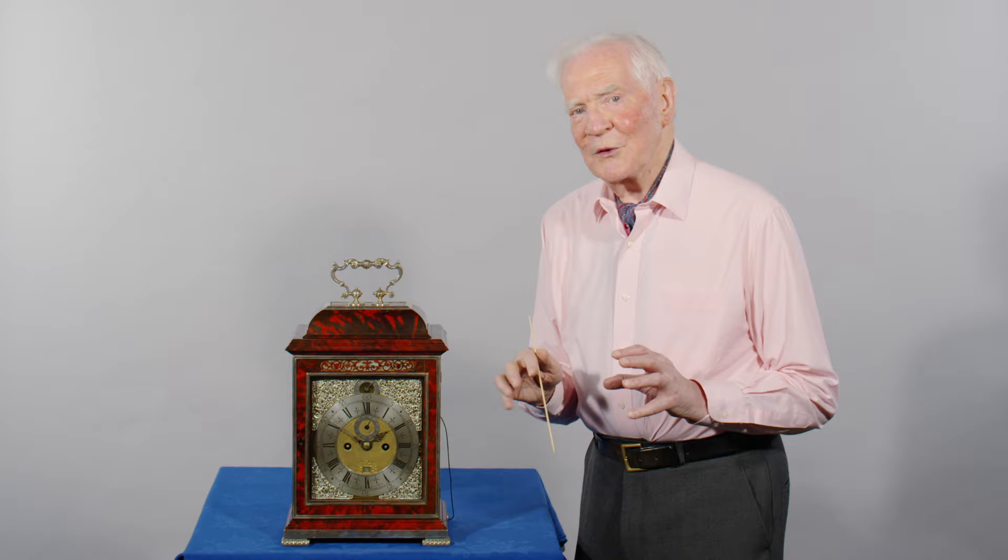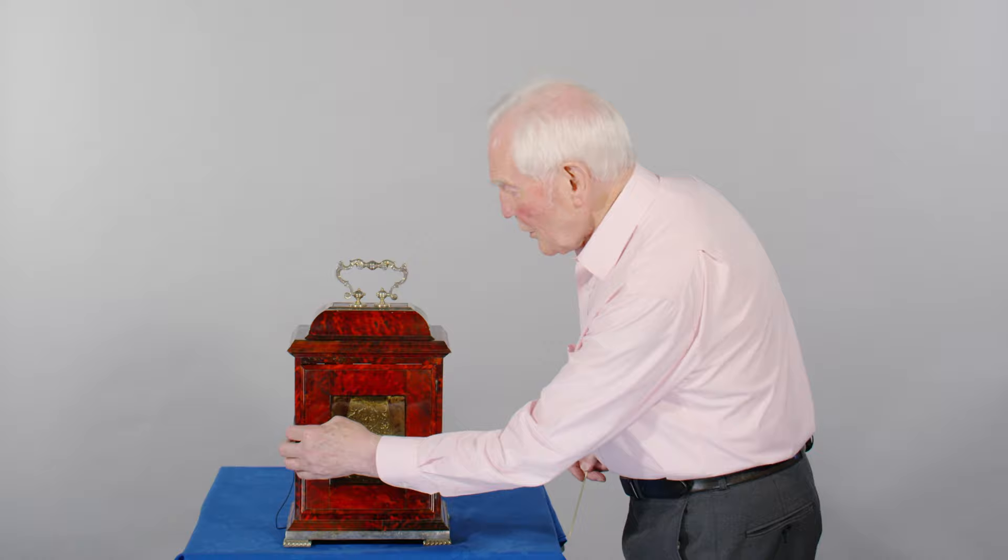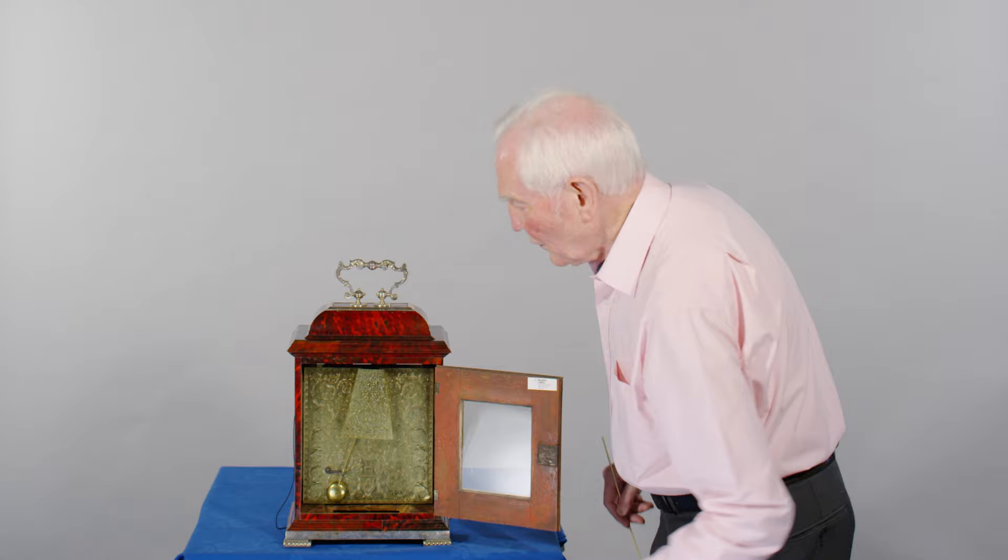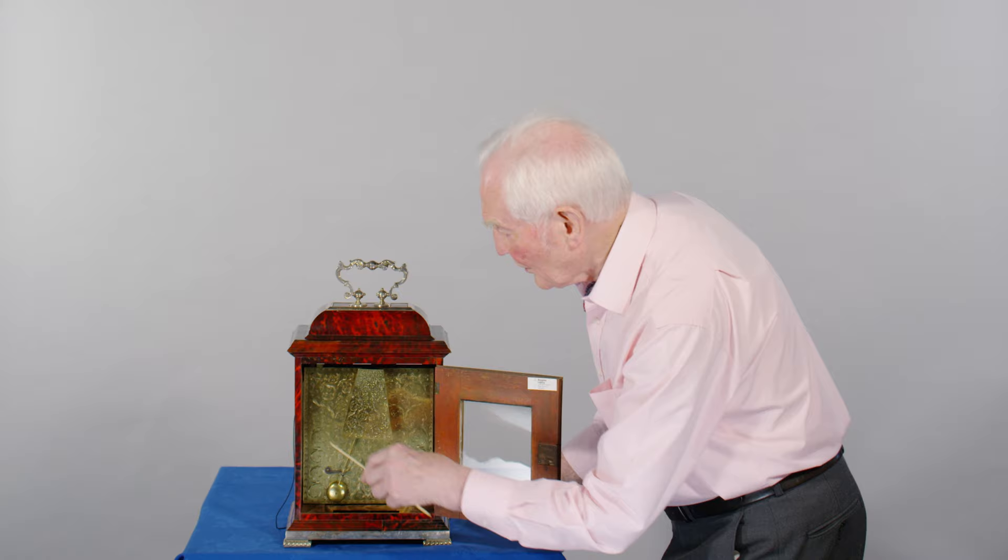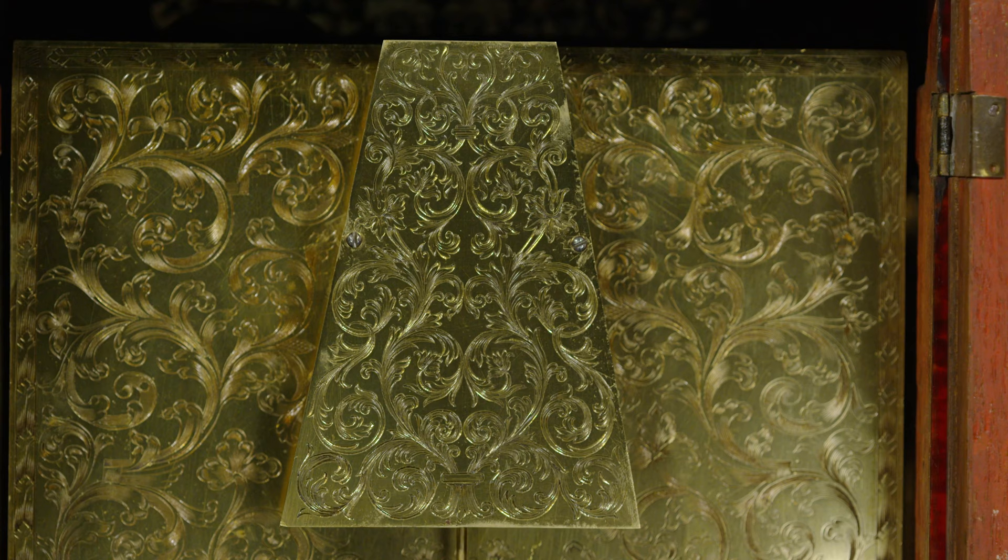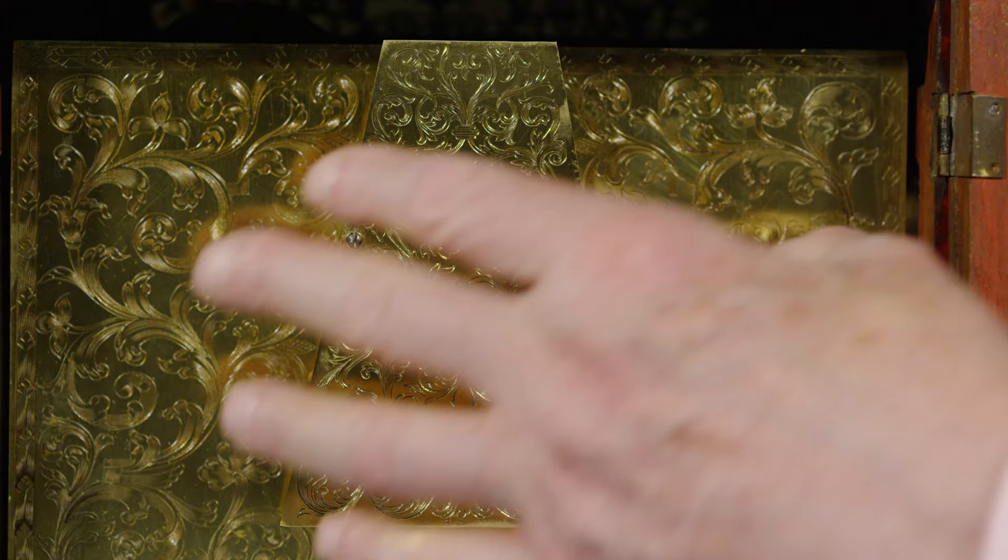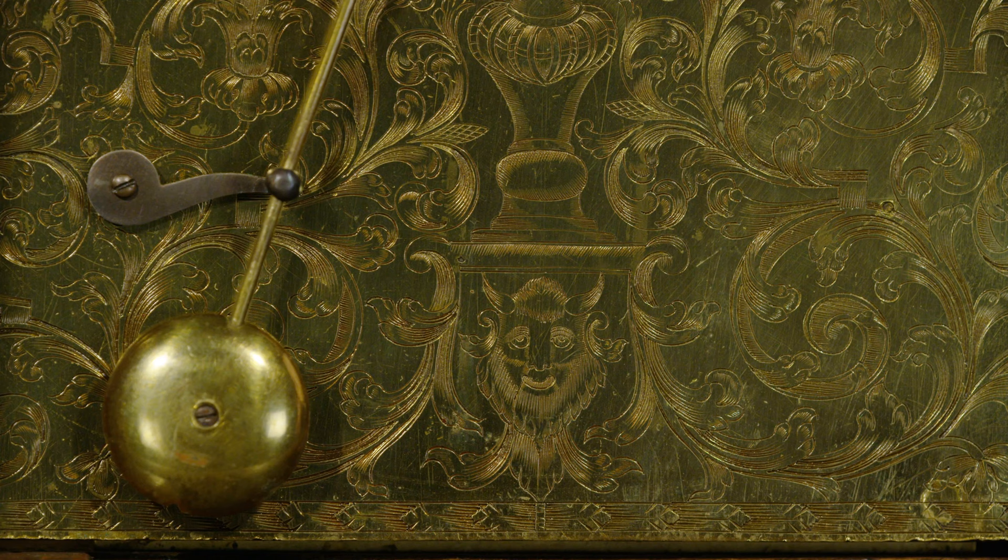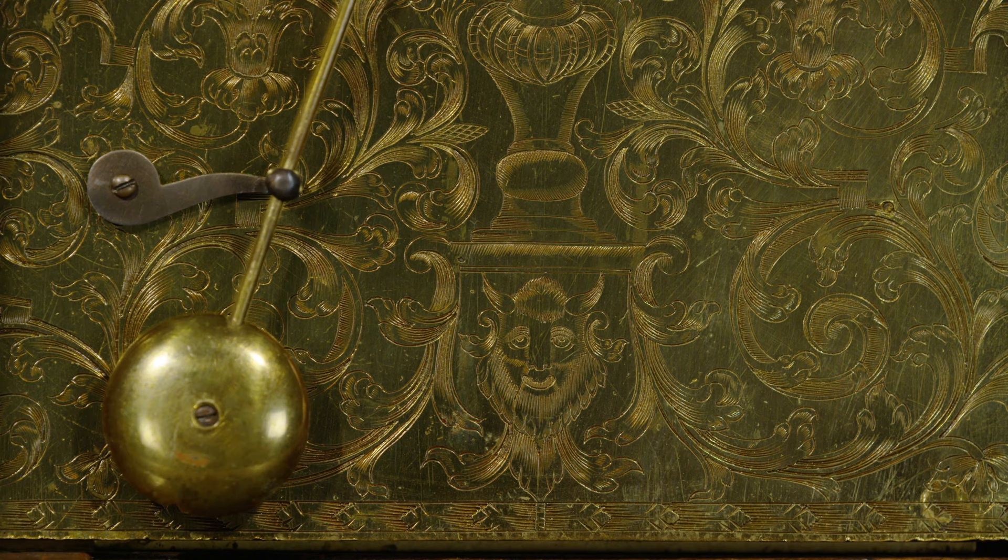The back door opens to reveal this lovely engraving on the whole of the false backplate. You can see that there's no arbors or the ends of arbors or clicks, winding clicks, just these wonderful acanthus engraving scrolls. Even the suspension for the pendulum is covered by the apron there which matches the engraving of the main backplate. Hidden in the engraving is this lovely vase, and on the base is a devil face looking at you.